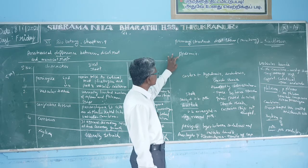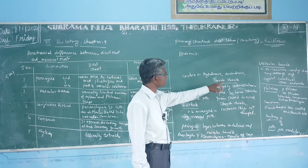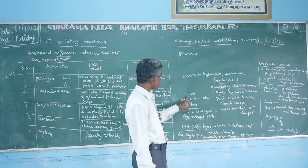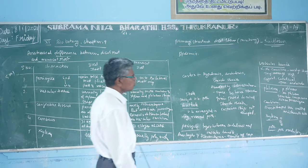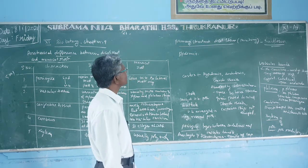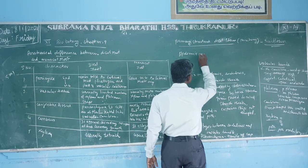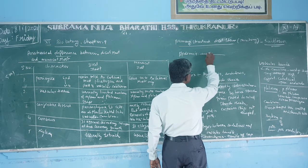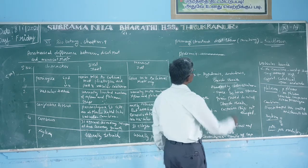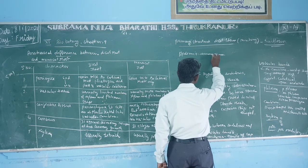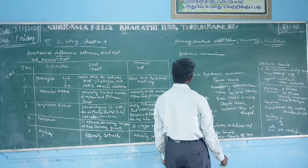The layers in dicot stem are: epidermis, cortex — which is differentiated into hypodermis and endodermis — then the stele, which includes pericycle, vascular bundle, phloem, cambium, and xylem. The epidermis is the outermost single layer of parenchyma tissue, tightly arranged with no intercellular space. The cells are interrupted by stomatal openings.